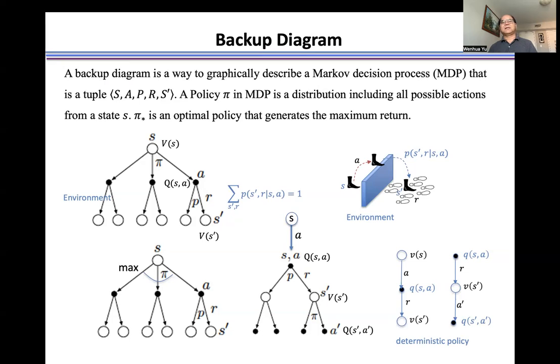A policy Pi in Markov decision process is a distribution. As we see here, we start from state S, and an agent has an option to select the action from a Pi distribution. Then the environment generates the reward in response to the agent's action, and the agent moves from the current state to the next state.